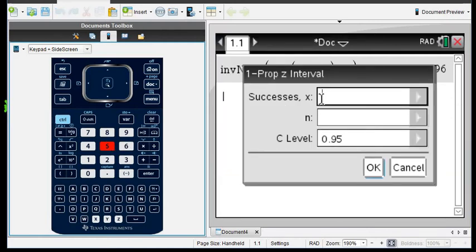For this, it asks us for x and n and our confidence level. x is your number of successes. So with this, I could actually plug it in as 0.46 times 1,040.